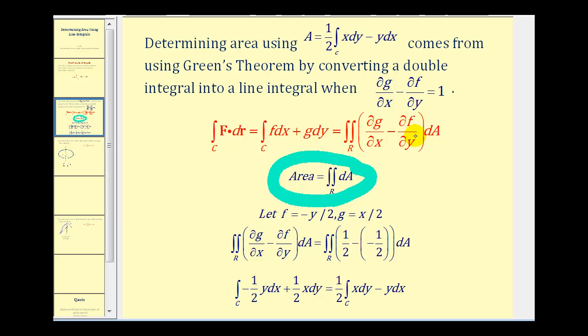So what we're going to do here is look at a special case of Green's theorem when this difference here is equal to one and then we'll write this double integral here as a line integral in differential form. So if our vector field f has components little f and little g, then if we let f equal negative y over two and g equal x over two,